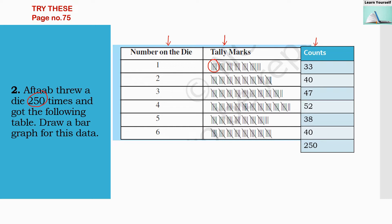For the first observation: 5+5+5+5+5+5+5+5+3 — six groups of five gives 30, plus 3, so that is 33 counts. That is how we count the tally marks.